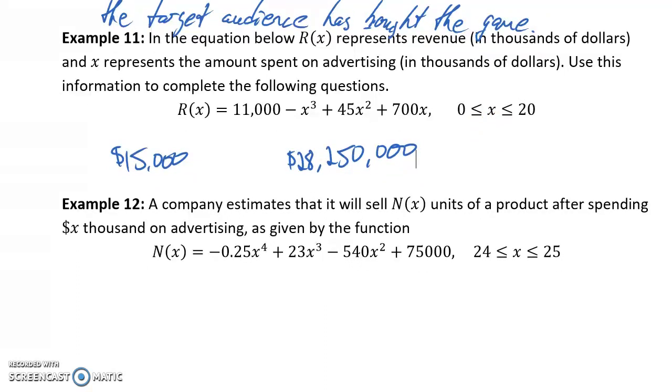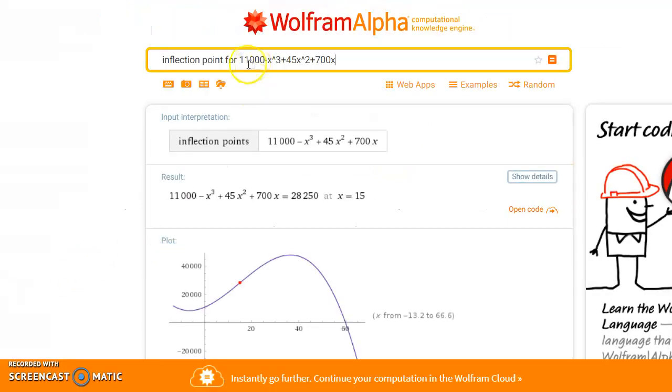In our last example, we have a company that estimates that it will sell N(x) units of a product after spending x thousand dollars on advertising, given by this function. So again, we can look for an inflection point for that function.